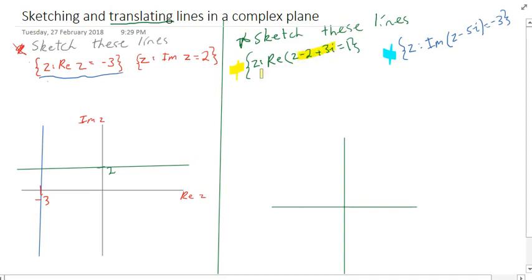So if you ignore this part for a moment, that's just real z equals 1. So real z equals 1 would be a line passing through the real axis at real equals 1. So it would be a line that looks like this.